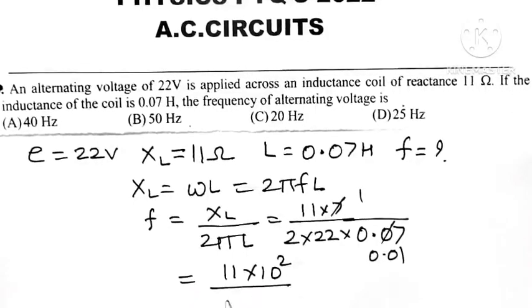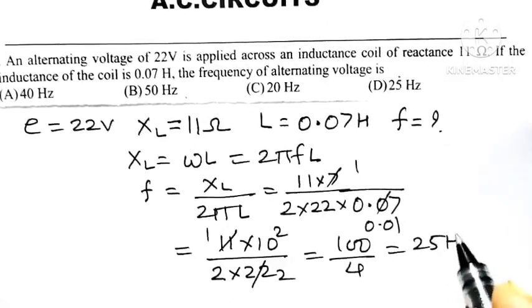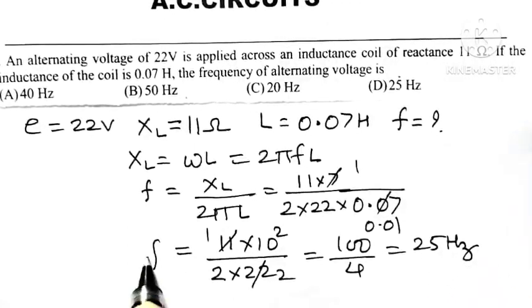divided by 2 times 22. 11 into 22 is 2, so we get 100 divided by 4, which equals 25 hertz. Therefore, the frequency f is equal to 25 Hz.